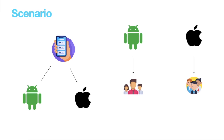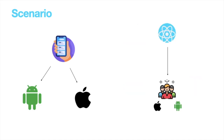Let us consider a scenario: if you are the owner of a company that has an app which people can download from the App Store or Play Store, then of course you want to target both Android and iOS customers. If React Native was not an option, you would need to hire two teams — one team responsible for developing the Android app and one team responsible for developing the iOS app. Whenever you need to achieve some functionality in both apps, both development teams would have to write two different code bases to achieve that.